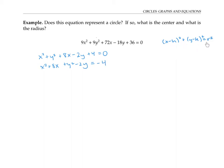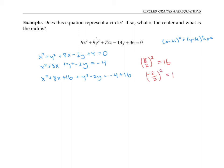This still doesn't look much like the equation of a circle, but in the next step I'm going to do something called completing the square. So I'm going to take the coefficient of x, eight, and divide it by two to get four, and square that to get 16. I'm going to add 16 to both sides of my equation. Then I'll do the same thing with the coefficient of y. Negative two divided by two is negative one. When I square that, I get one. So I'm going to add one to both sides of my equation.